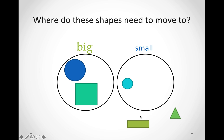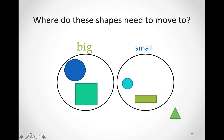Let us look at this rectangle over here. Is it big or is it small? It is small. So, we are going to put it in the circle that says small. And let us look at this triangle. Is it big or is it small? It is small. So, we are going to put it in the circle that says small.